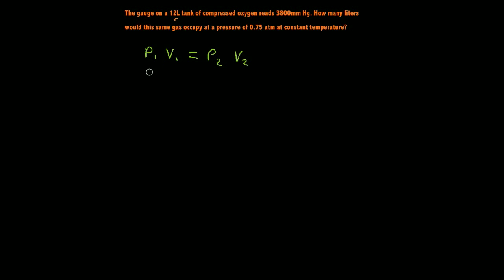So let's add our qualities in here with this formula. Pressure 1 was 3,800 millimeters of HG times volume 1, which was 12 liters.